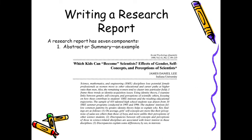Here is an example of how the abstract can be written. The abstract size is only one paragraph. In this paragraph, the author has written everything in a brief manner about the research conducted. The title of the paper is 'Which Kids Can Become Scientist? Effects of Gender, Self-Concept and Perceptions of Scientist.' For this entire research, the summary is written in not more than one paragraph — that is called an abstract or summary.